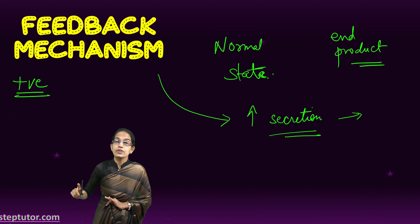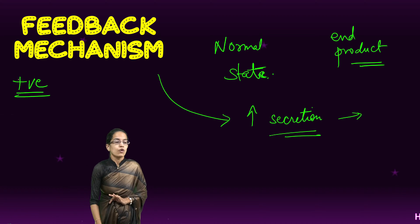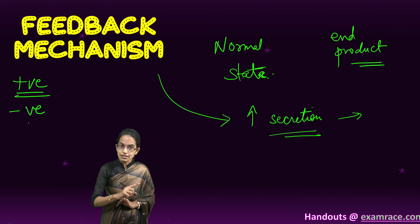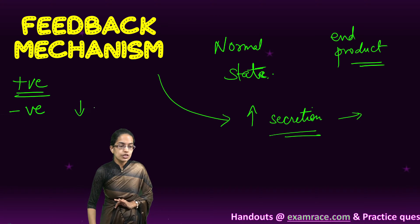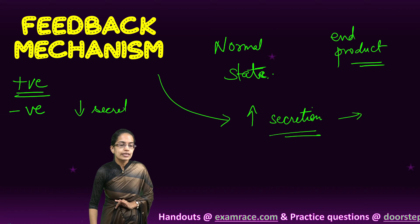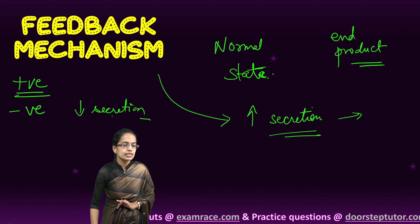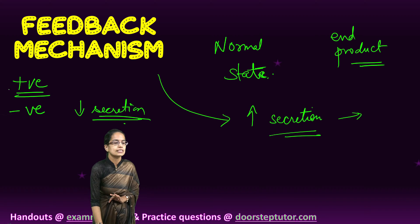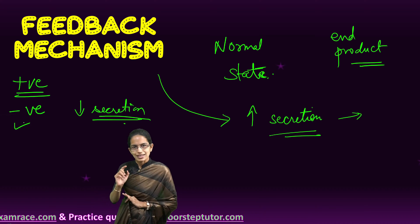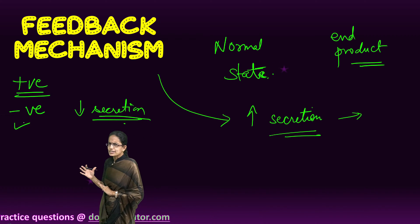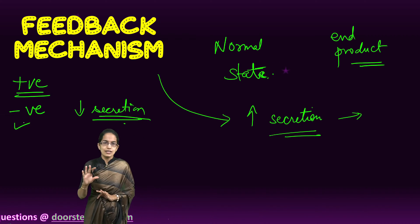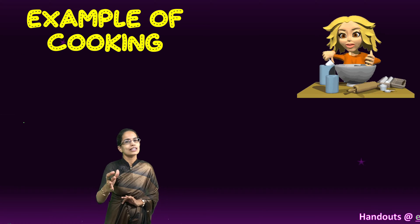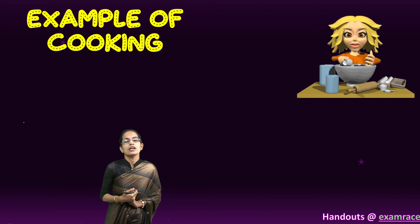However, when the secretions are too much, what we need is a negative feedback — we need to reduce the secretions. This reduction in secretion in order to come back to normal would be called negative feedback. This might appear a little confusing, so we have a very simple example from our daily cooking life.